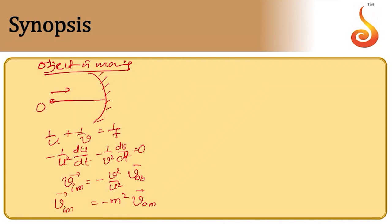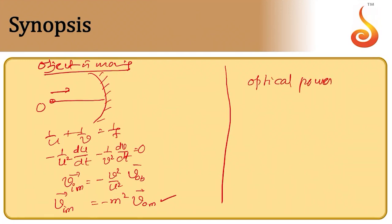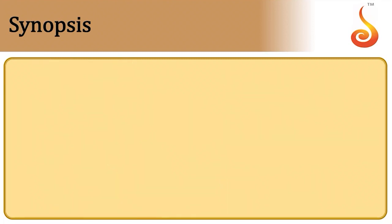The optical power of a mirror is given by minus 1 by f, measured in diopters. So, the optical power of a mirror is the reciprocal of its focal length with a negative sign.